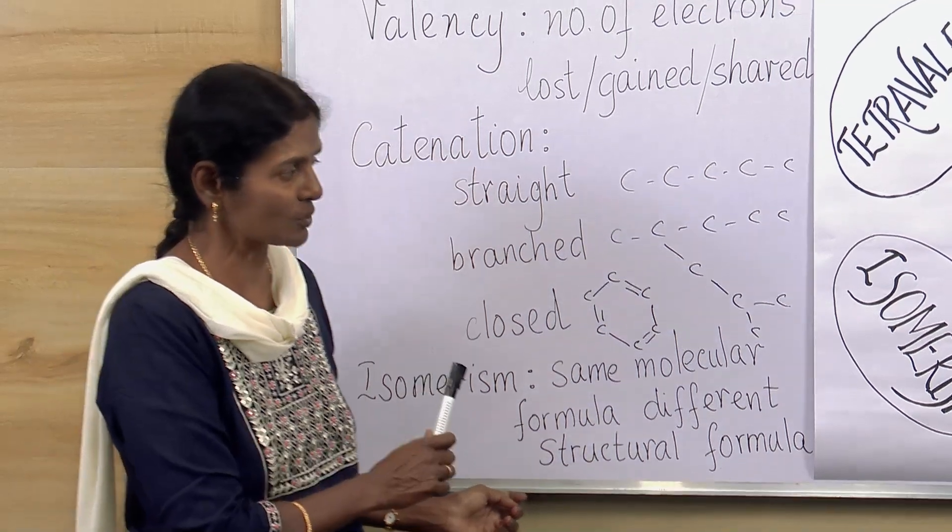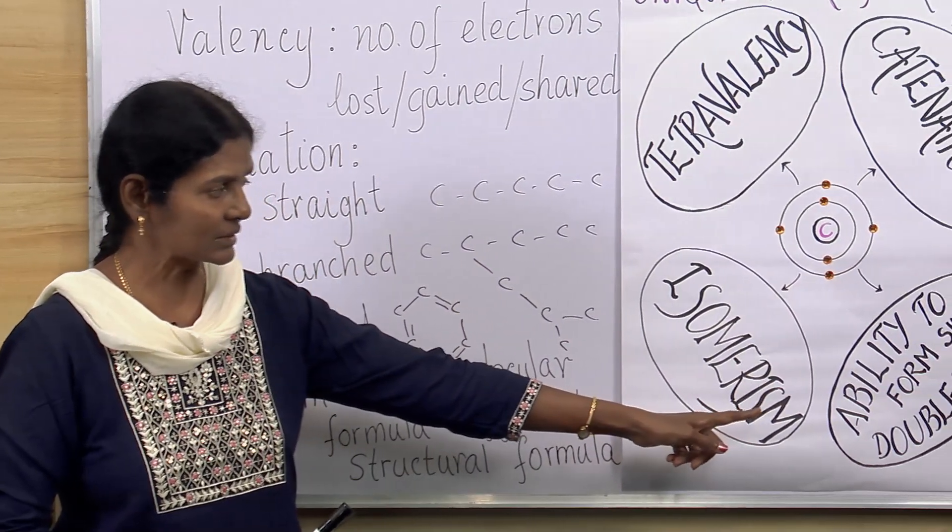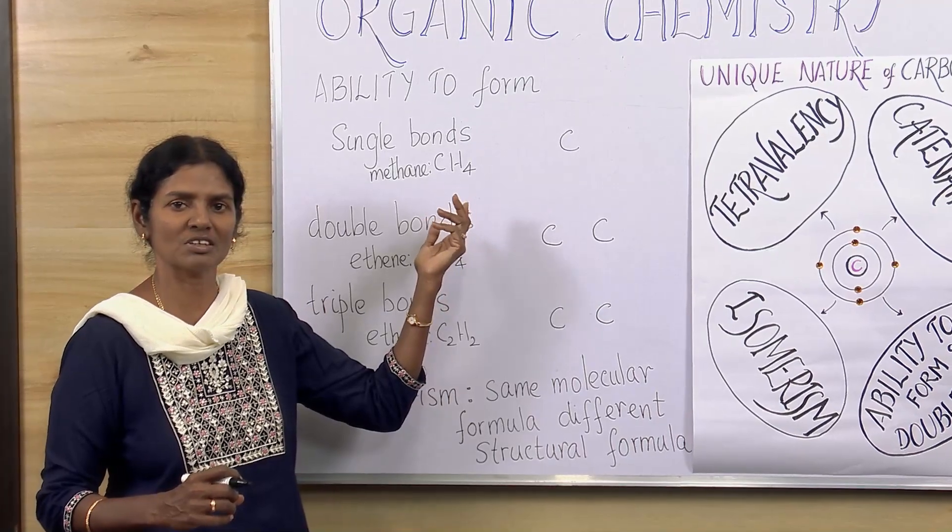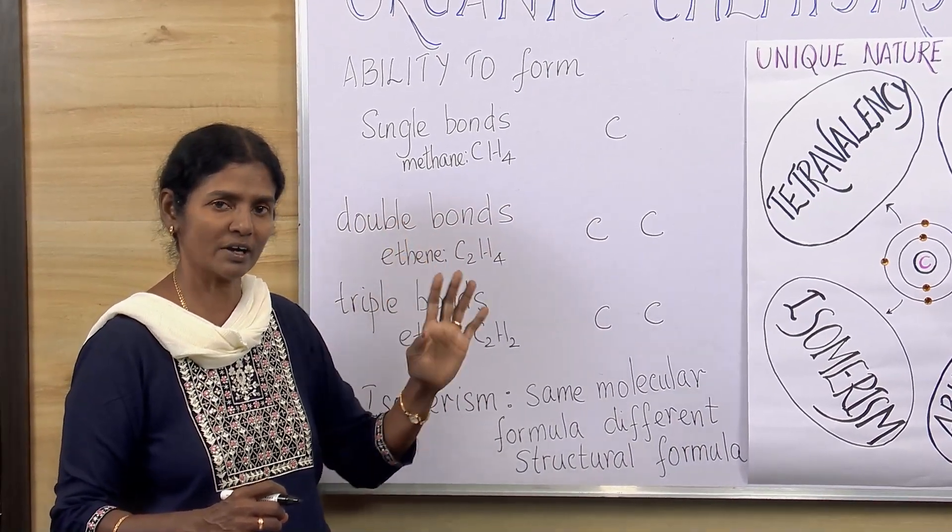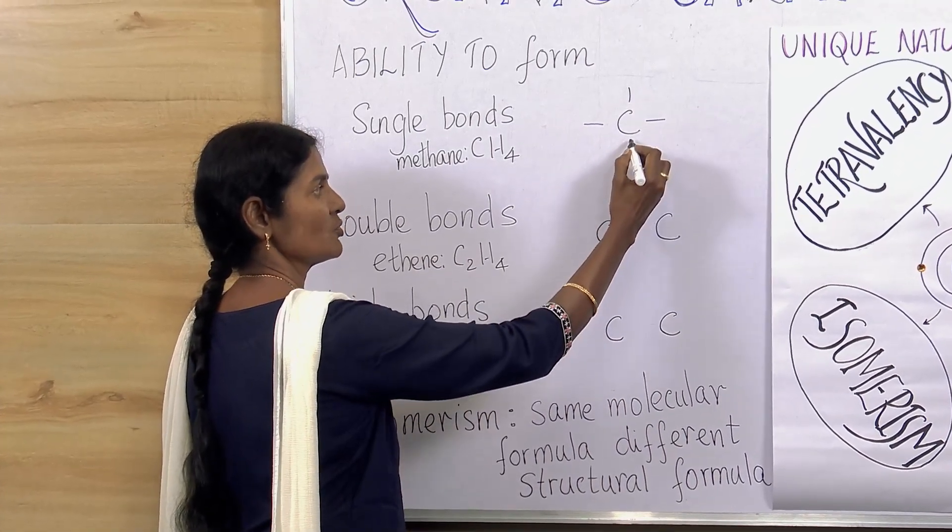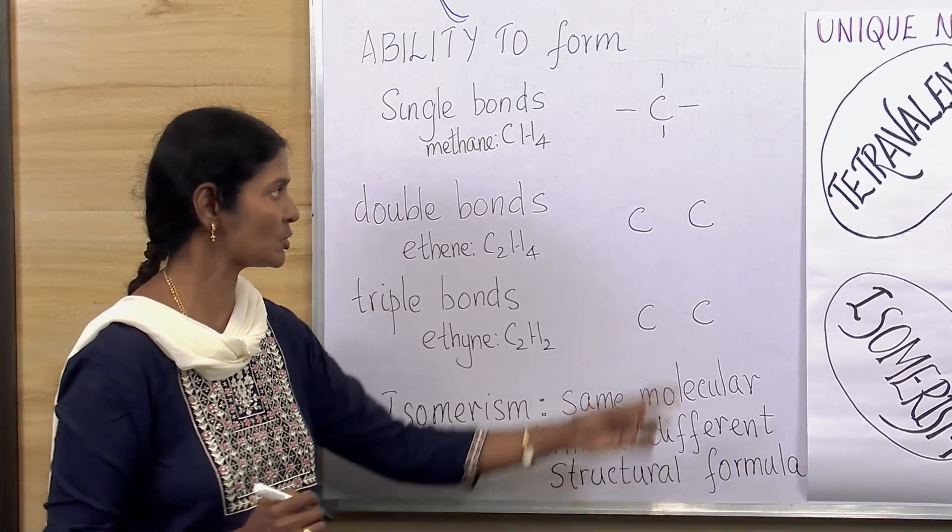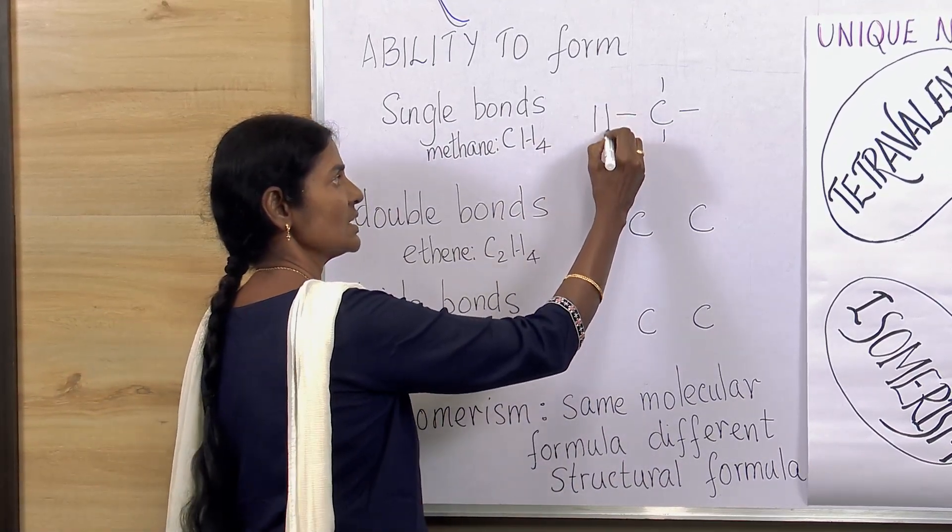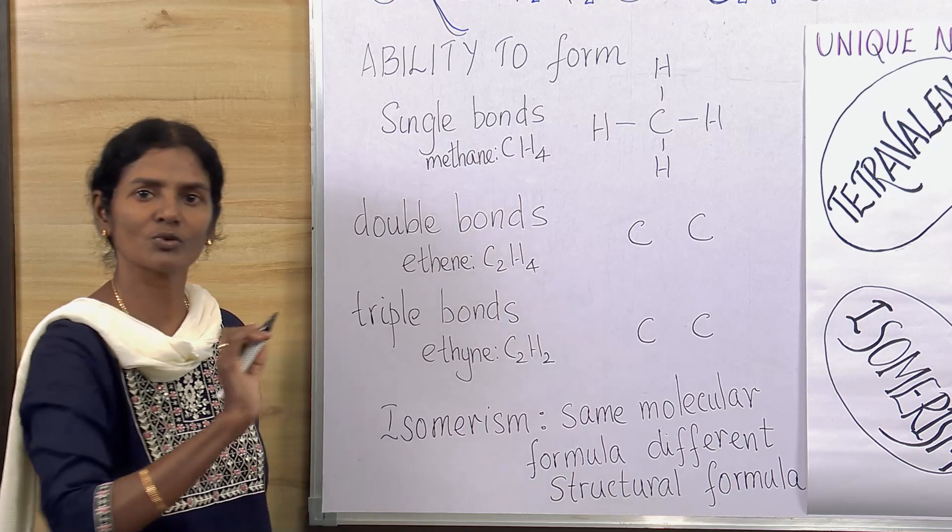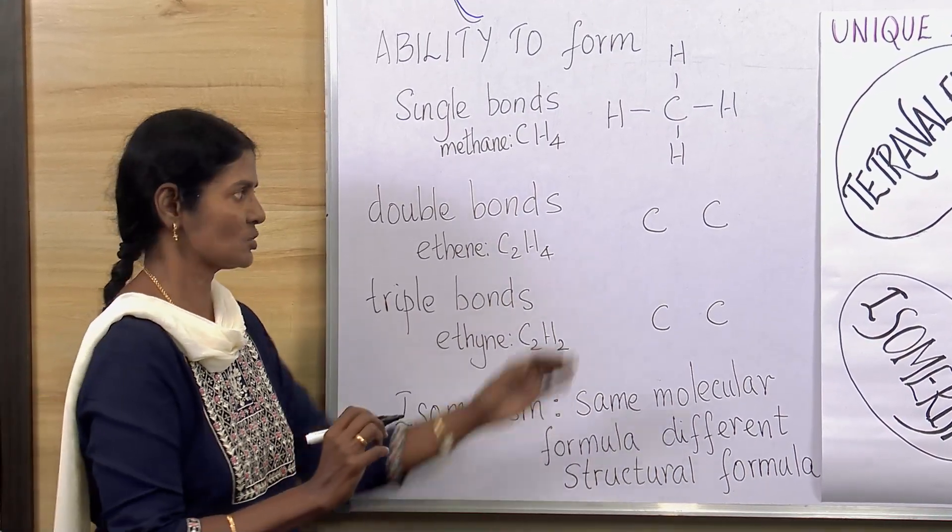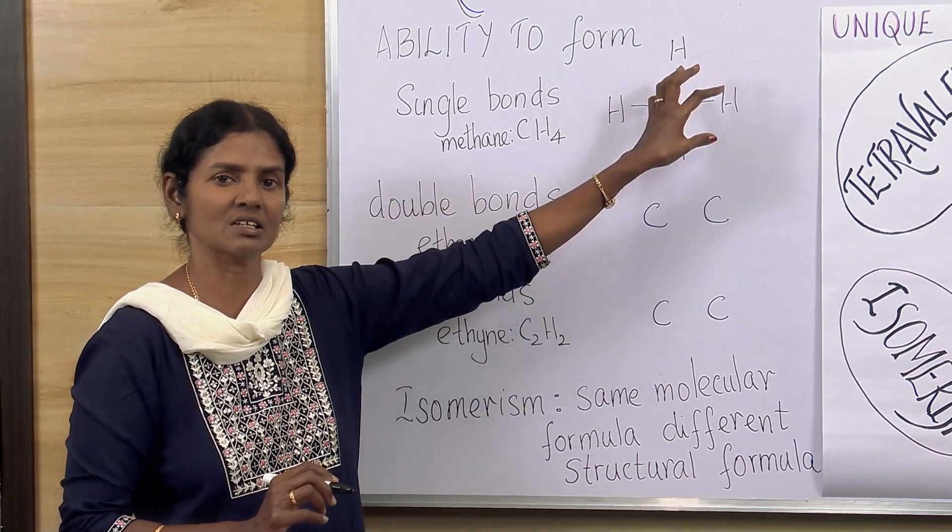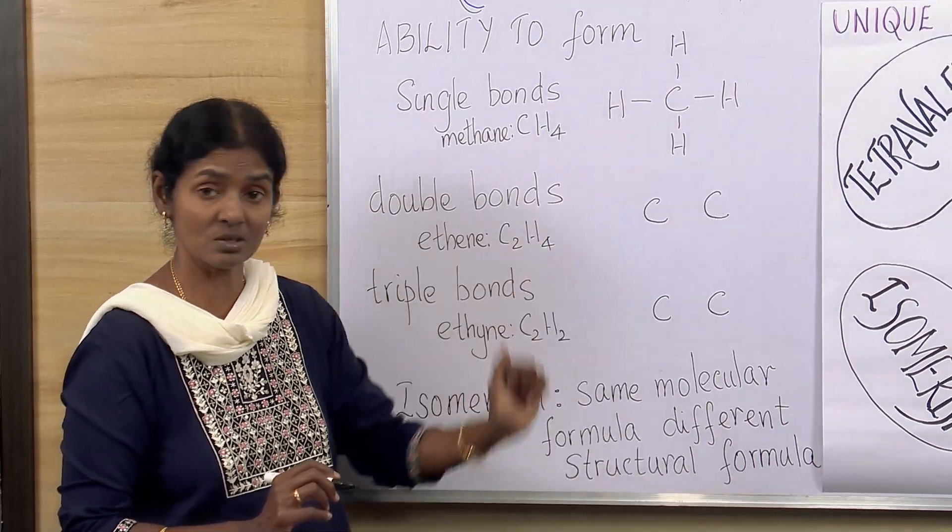Now, we move on to the fourth one. The ability to form single, double and triple bonds. How does it form single bonds? Let's take the structure of methane. It has four hydrogen atoms and one carbon atom. This has four bonds, four single bonds. Each hydrogen atom shares its electron with the carbon atom to form four single covalent bonds. Thereby, these hydrogen atoms obey the duplet rule and the carbon atom gets eight, so it obeys the octet rule. These are all single bonds.